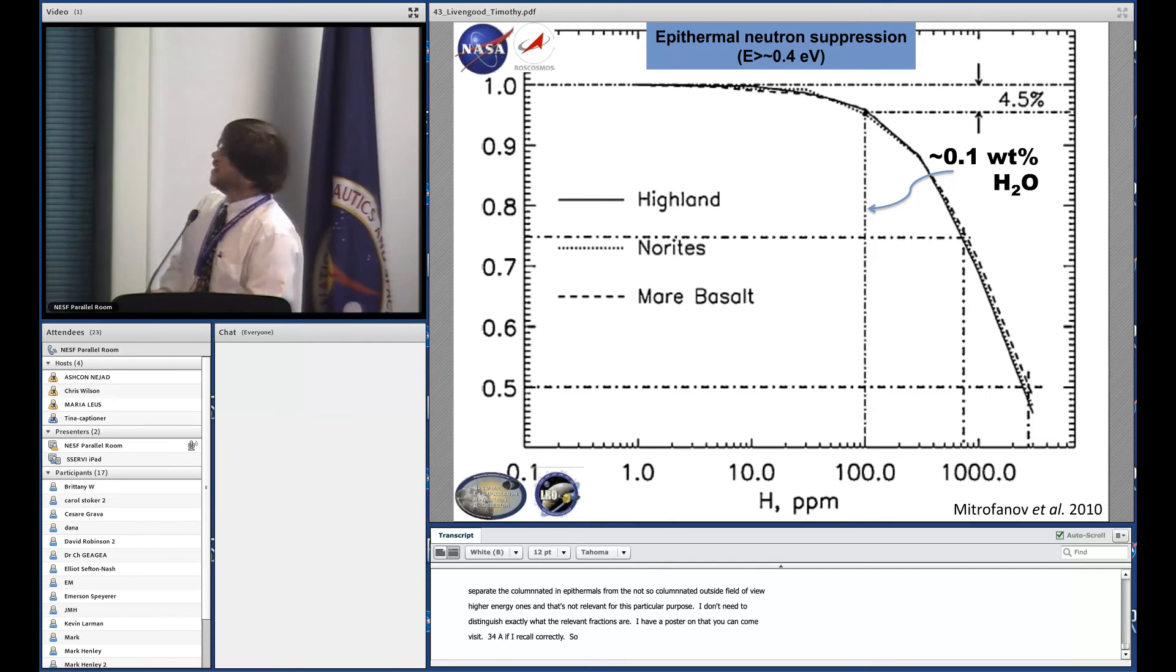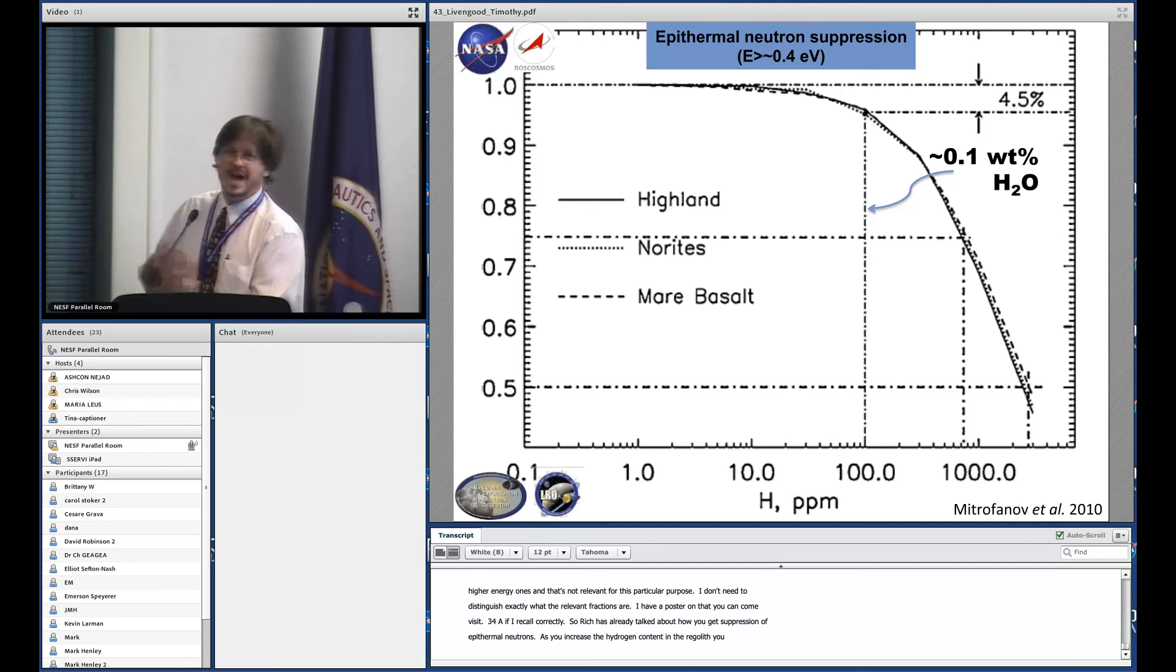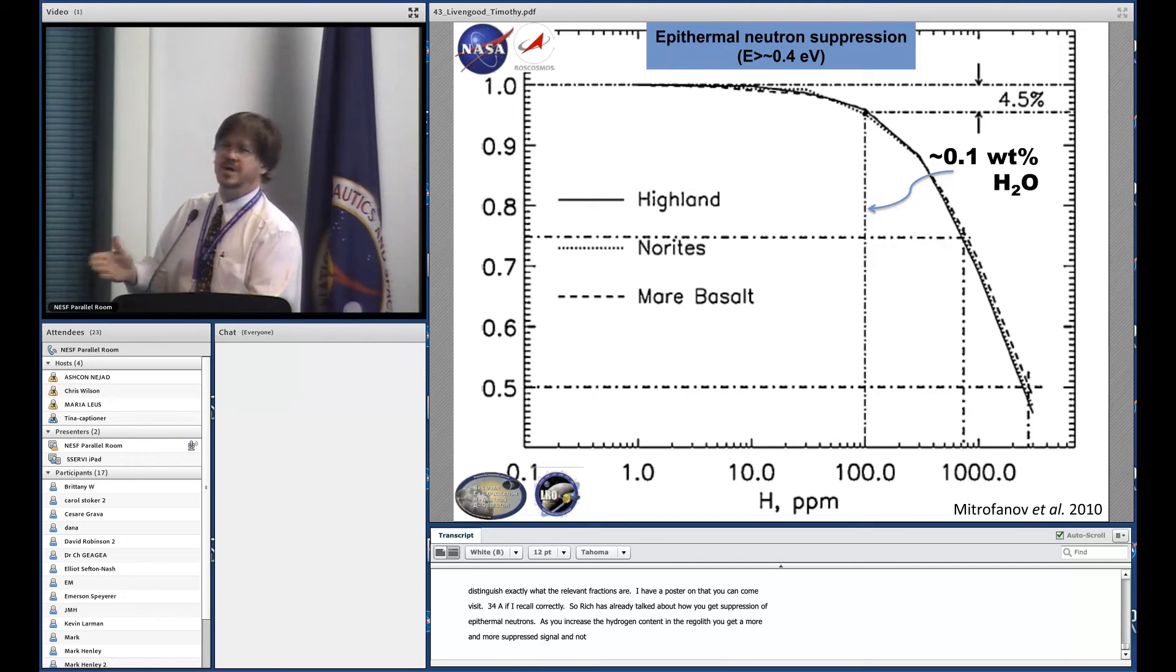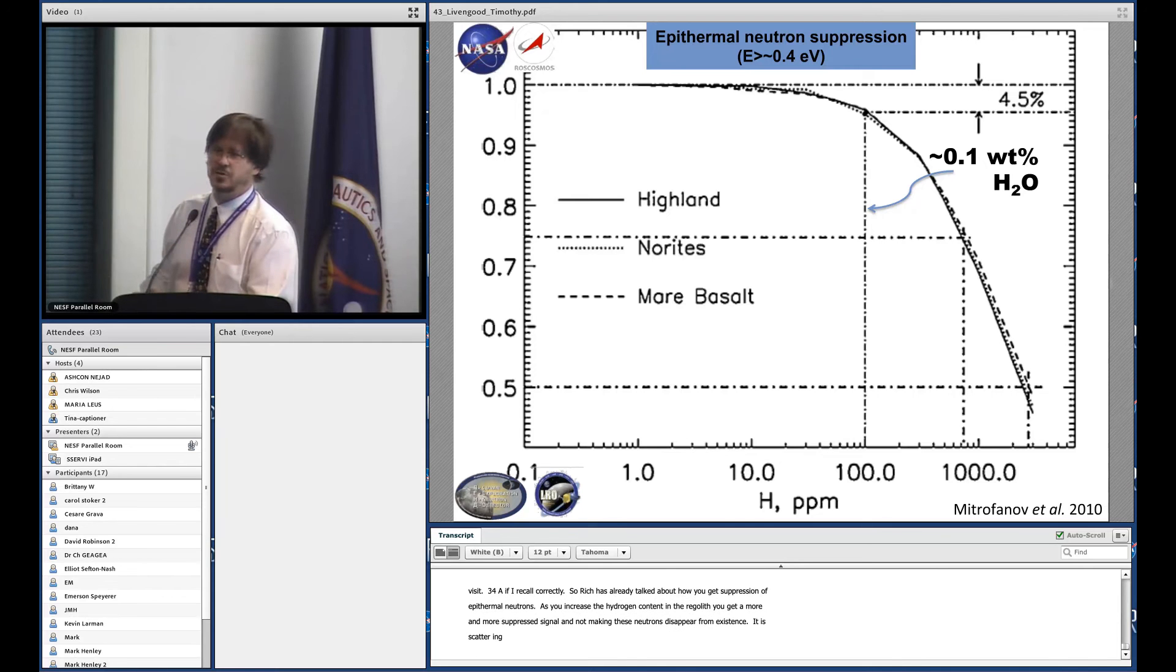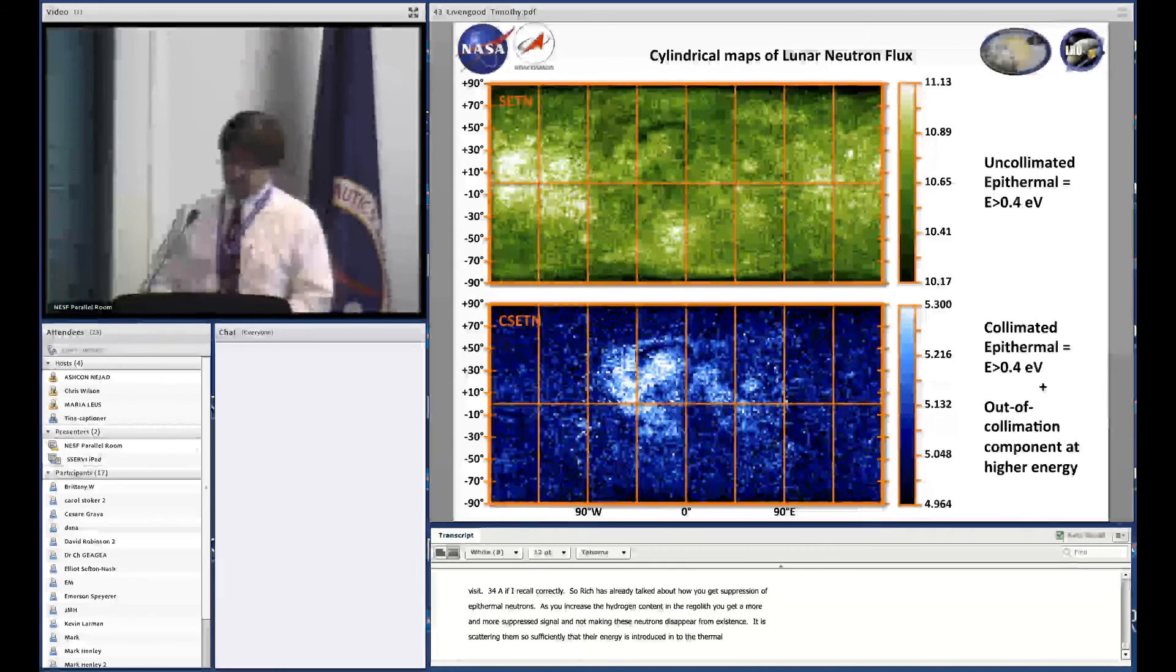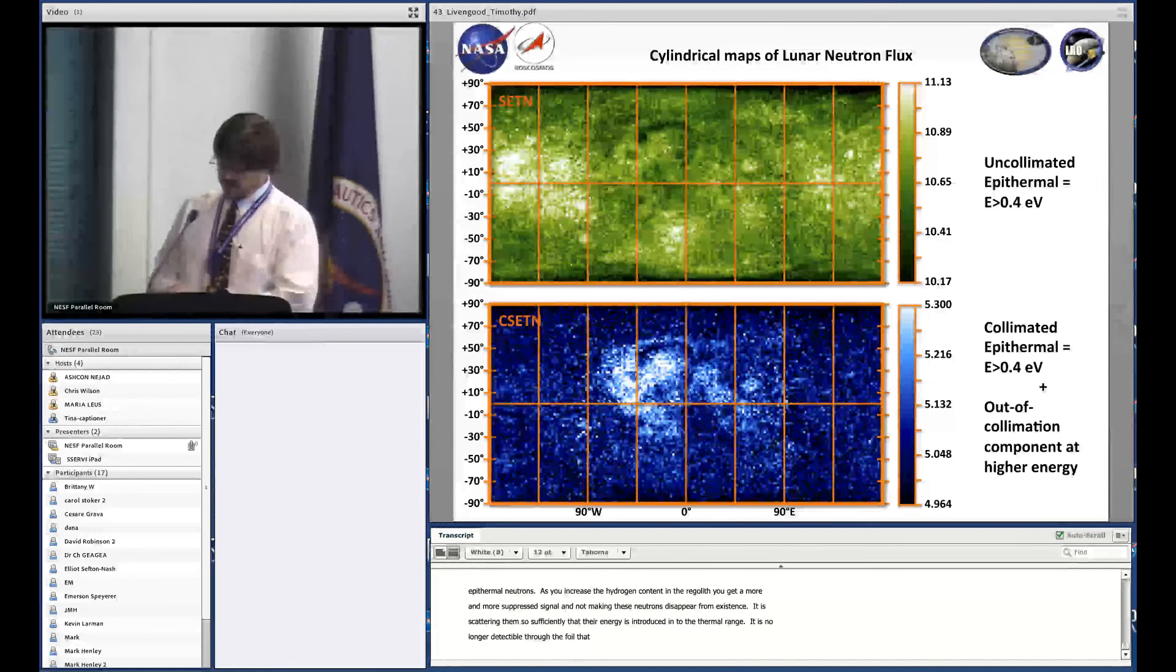Rich has already talked about how you get suppression of epithermal neutrons. As you increase the hydrogen content in the regolith, you suppress the epithermal neutrons. It's not making these neutrons disappear from existence, it's scattering them so efficiently that their energy is reduced into the thermal range, so they're no longer detectable through the foil we use on the detector.